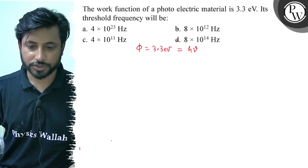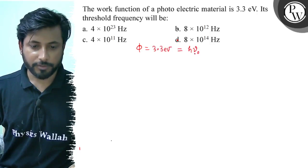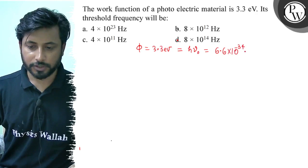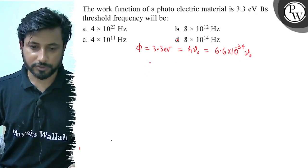φ value is h ν₀. We have ν₀, where h value is 6.6 × 10^-34 times ν₀. So here you have threshold frequency.